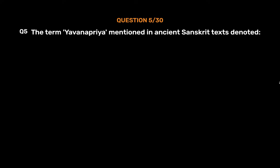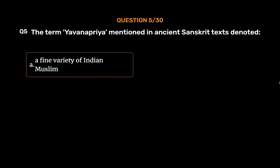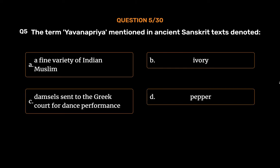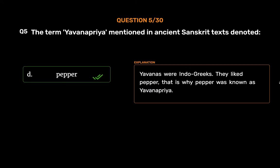Question number five: The term 'Yavanapriya' mentioned in ancient Sanskrit texts denoted — Option A: a fine variety of Indian muslin, Option B: ivory, Option C: a damsel sent to the Greek court for dance performance, Option D: pepper. The correct answer is Option D, pepper. Yavanas were Indo-Greeks; they liked pepper, which is why pepper was known as 'Yavanapriya.'